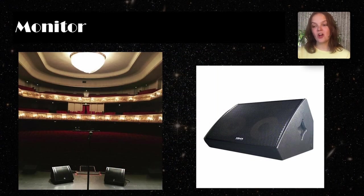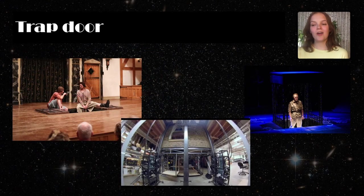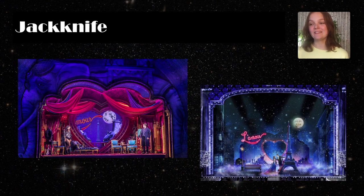A monitor is an offstage speaker that allows actors to hear the rest of the band as well as themselves. This set of actor-facing speakers is also referred to as monitor speakers, stage monitors, floor monitors, wedges, and foldbacks. A trapdoor is a hidden entrance in the stage floor that allows performers, props, and scenery to enter and exit the stage. The space underneath this door is called the trap room. A jackknife is a set piece used for quick scene changes, consisting of one or multiple platforms on wheels that can move and rotate. Some can be secured at one corner, allowing them to pivot on the stage, or they can move offstage when needed.